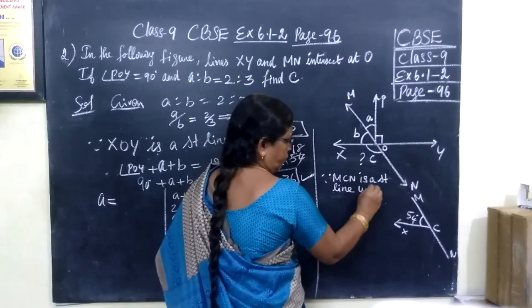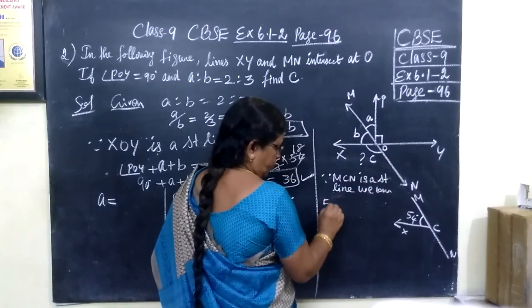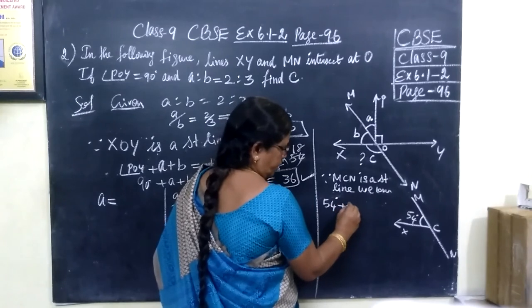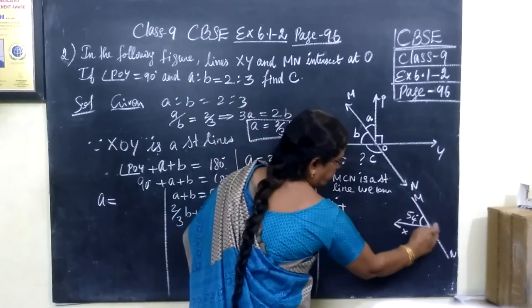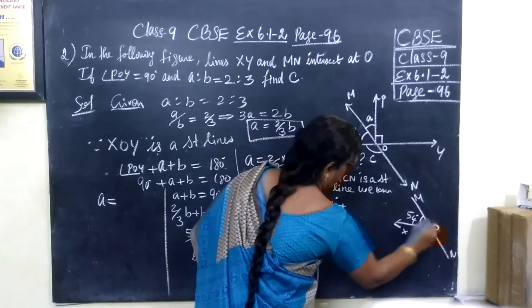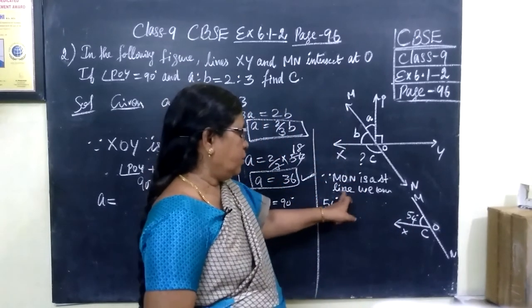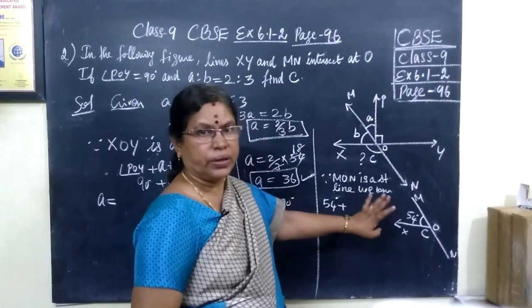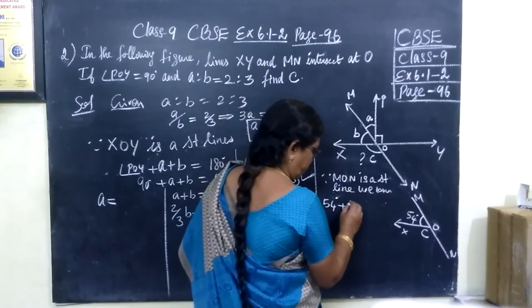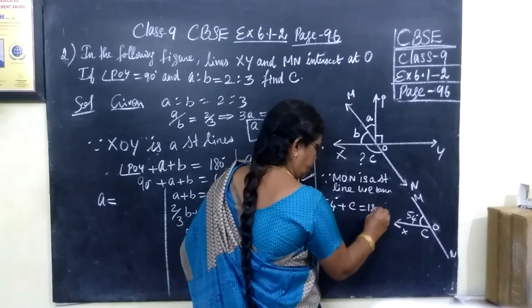So since MON is a straight line, we know 54 degrees plus angle C. This is C, and this is O. Actually, you have to write M, O, N. MON is a straight line. So we know sum of the angles equals 180 degrees. So 54 plus C equals 180 degrees.